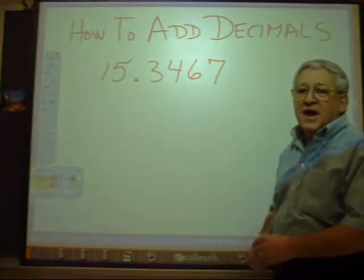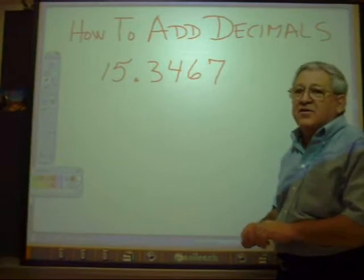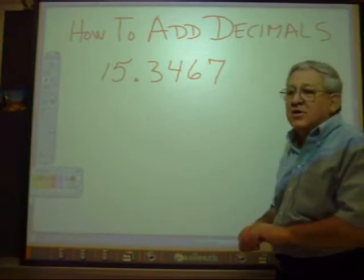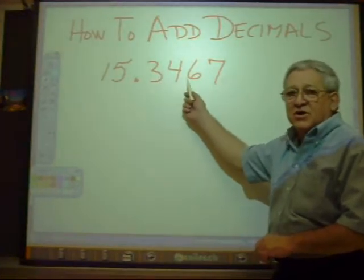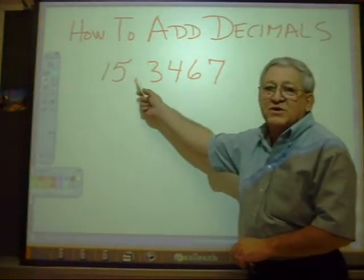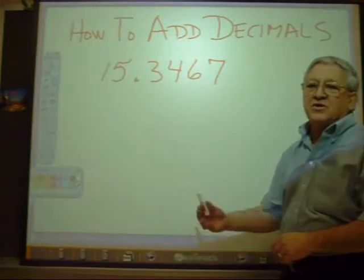If we're going to add decimals together, we have to make sure that we add things together that are alike. So we're going to add tenths to tenths, hundredths to hundredths, ones to ones, tens to tens, and so forth.